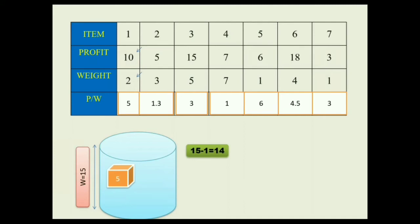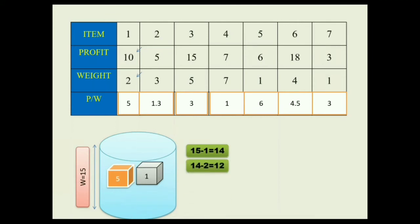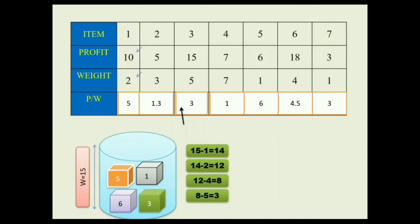The next maximum item is item 1. We check its weight — it is 2, which is less than 14, so we place item 1. The next maximum is item 6 with a weight of 4. The current capacity is 12, so 4 is less than 12 — we place item 6. Capacity becomes 12 minus 4 equals 8. The next maximum is item 3 with a weight of 5. Since 5 is less than 8, we place item 3. Capacity becomes 8 minus 5 equals 3.